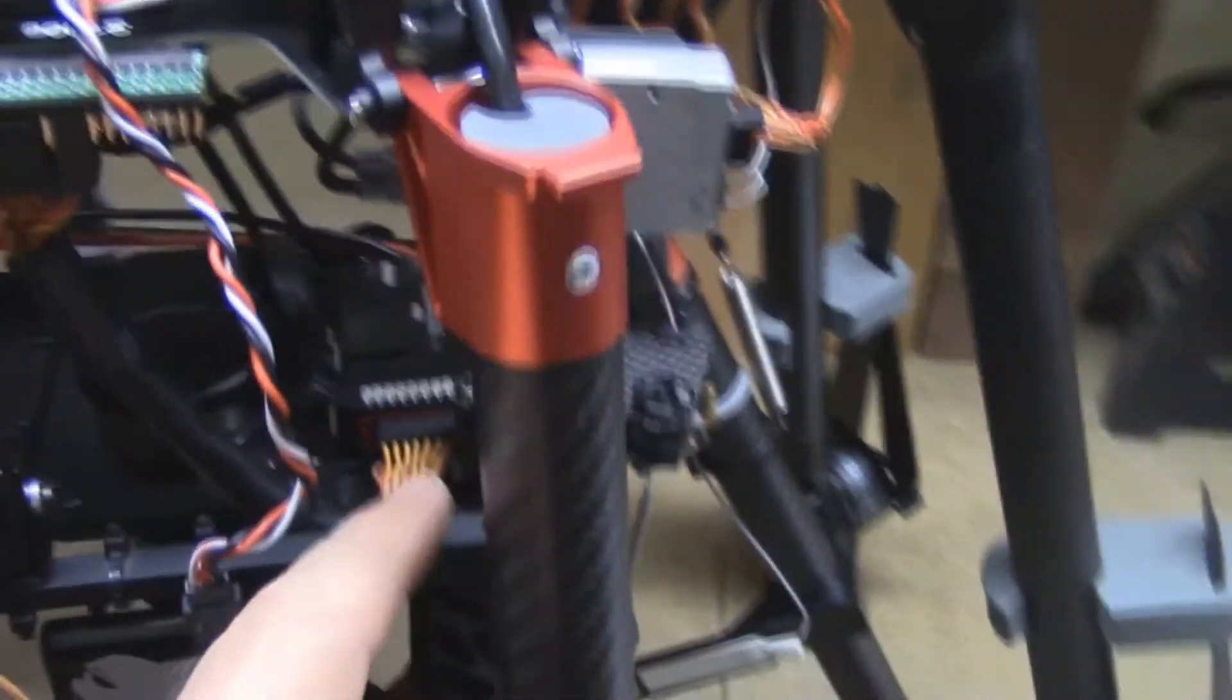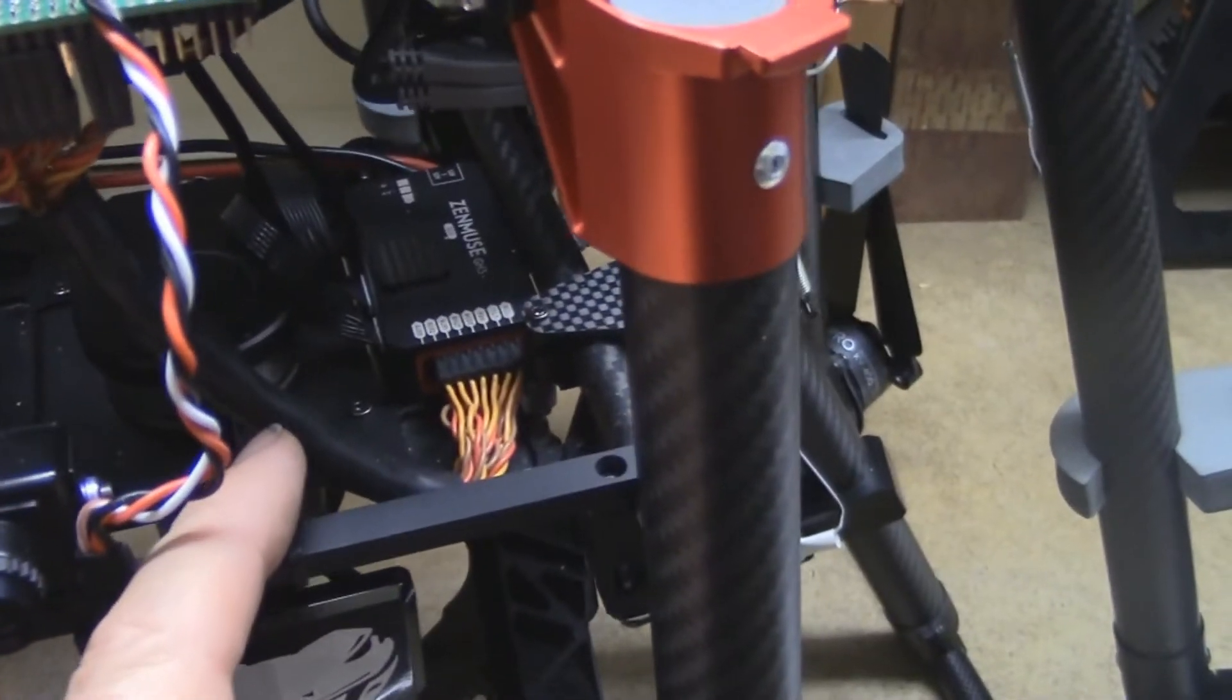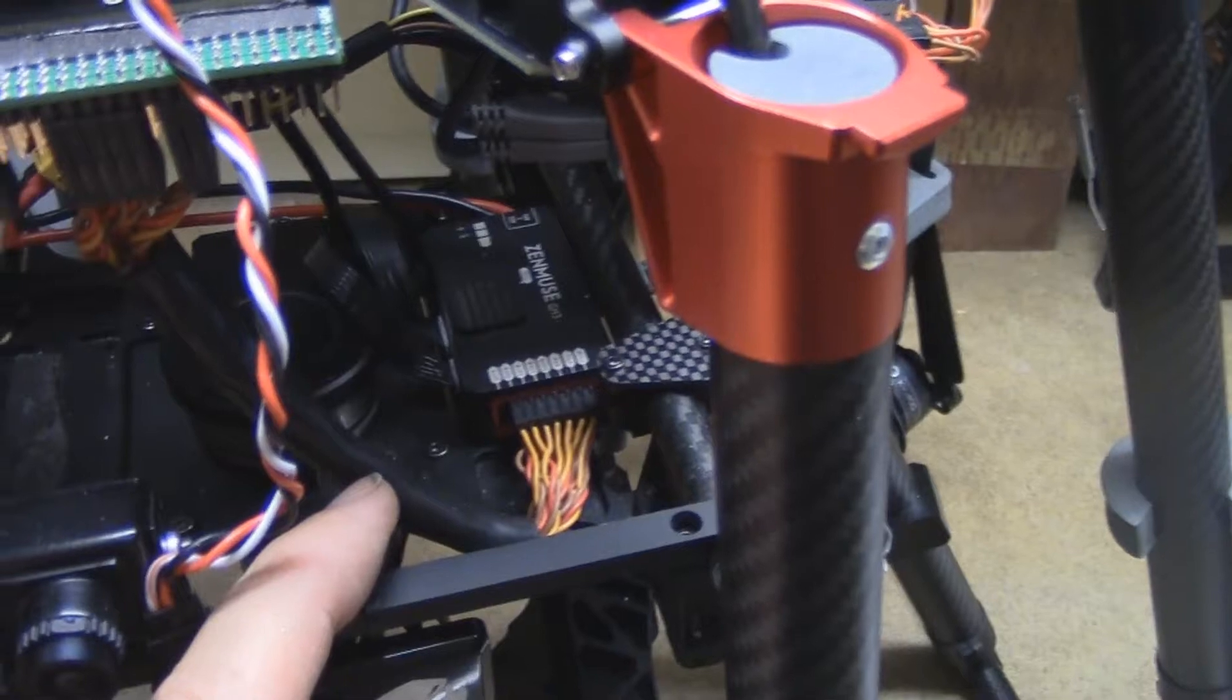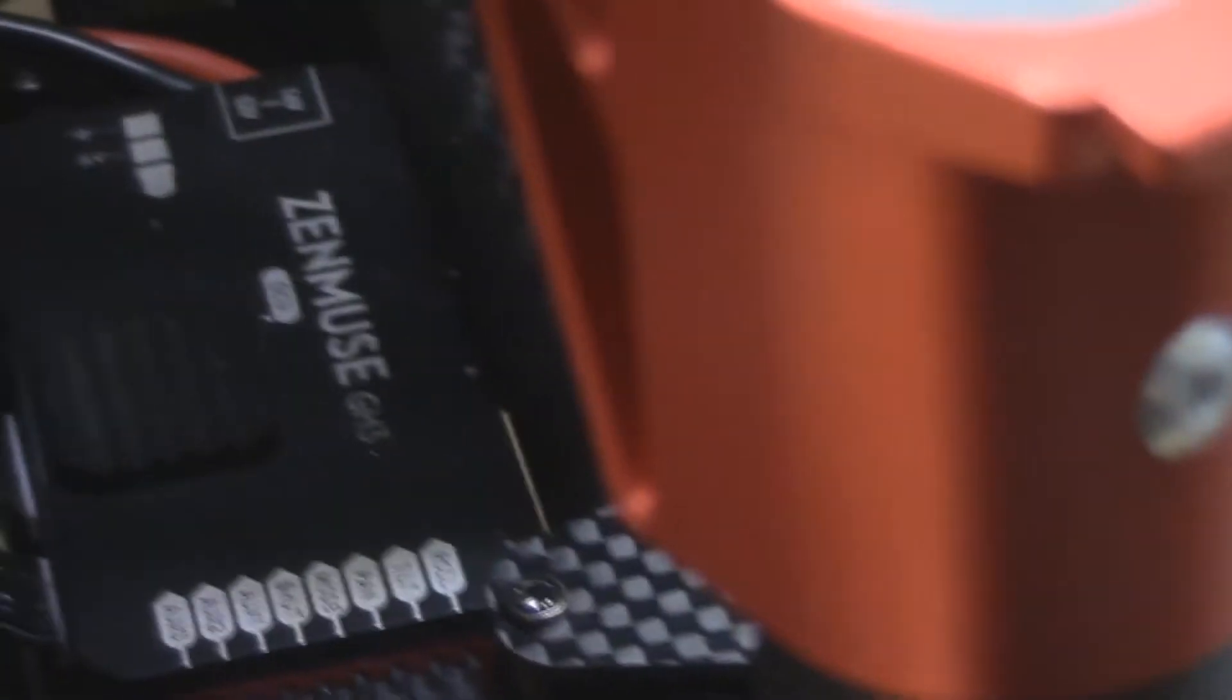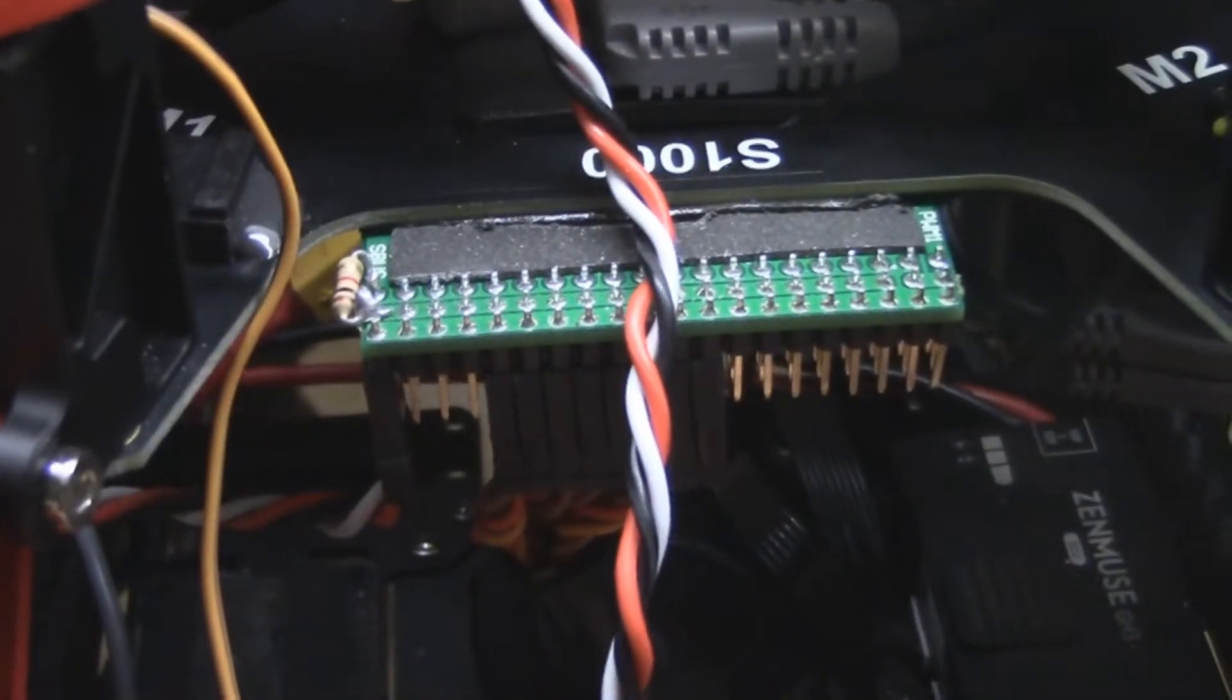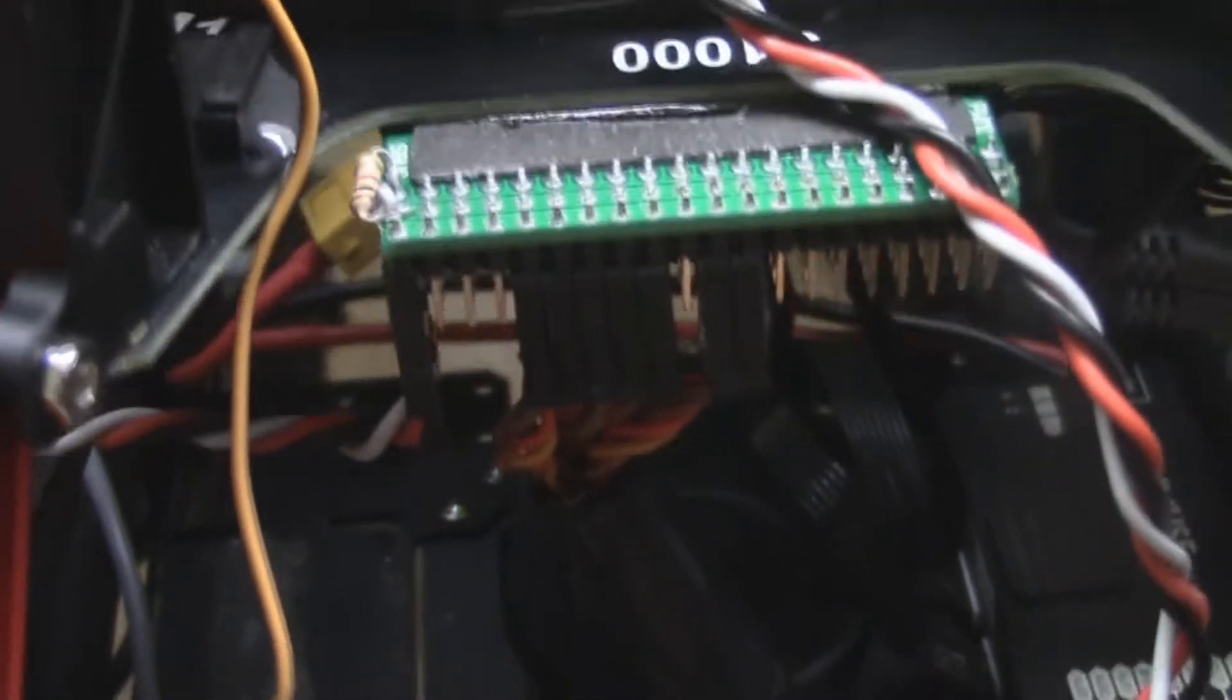And then I've taken the gimbal wiring right in there if you can see it, and then I've mapped it into the SBUS decoder. This is the wiring that I'm using.